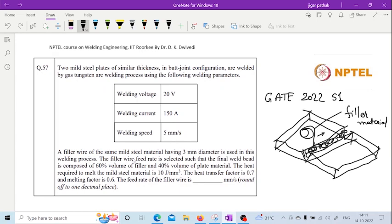A filler wire of the same material having 3mm diameter is used in this welding process. The filler wire feed rate is selected such that the final weld bead is composed of 60% volume of the filler and 40% volume of plate material. The heat required to melt the steel is 10 J/mm³, heat transfer factor is 0.7, and melting efficiency is 0.6.